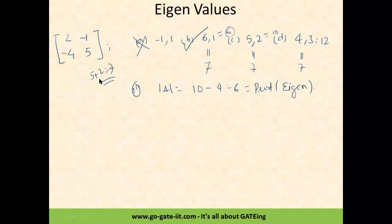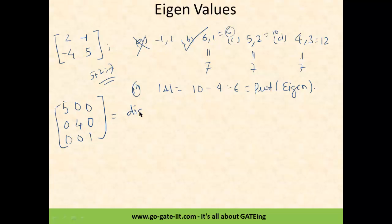You must be aware of certain special matrix types. For a diagonal matrix such as [5,0,0; 0,4,0; 0,0,1], you can directly say that the eigenvalues are nothing but the diagonal elements: 5, 4, and 1.